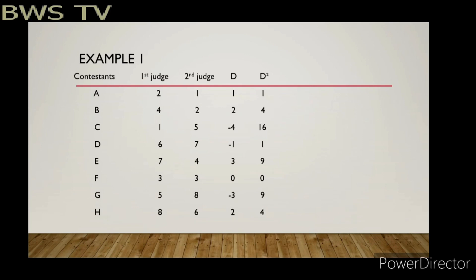In our first example, there are five columns: one for contestants, one for the first judge, one for the second judge, D, and D squared. In the contestants row, there are eight letters — A, B, C, D, through H. The first judge and second judge scores are already given, so we have to find the difference between the two by subtracting.